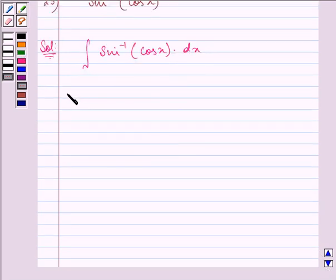Now, we know that cos theta equals sine of 90 minus theta, right?